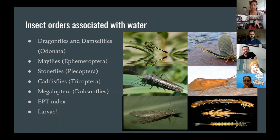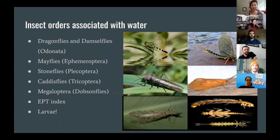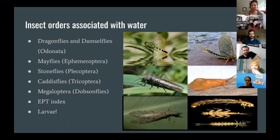Dobsonflies, or Megaloptera, are predominantly found in North America and are distinctive with big mandibles that look intimidating but don't actually bite — they're for mating displays. What's really cool is that mayflies, stoneflies, and caddisflies are all super sensitive to water quality. There's the EPT index — named for their Latin names — which is the proportion of larvae found in a river or stream that are these three orders. Government agencies actually use this to assess river water quality. If you're seeing these insects or their larvae along your river, that's a great sign of a clean, healthy ecosystem.